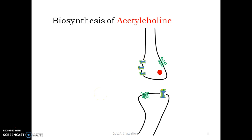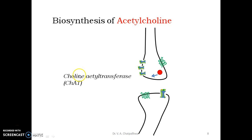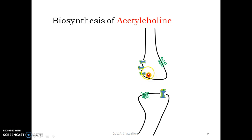This choline is acted upon by an enzyme called choline acetyltransferase, abbreviated as ChAT. As the name indicates, it transfers an acetyl group over choline. The resulting acetylcholine is stored in vesicles which migrate towards the periphery.